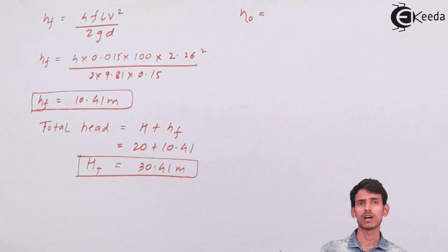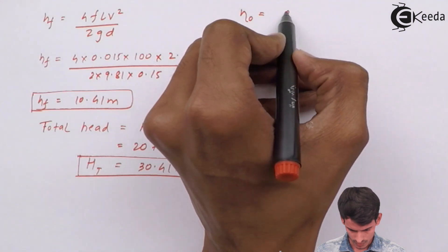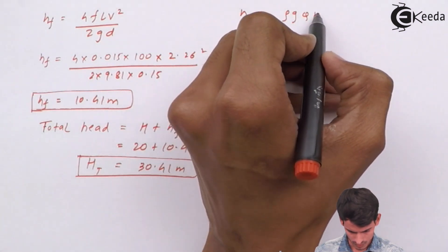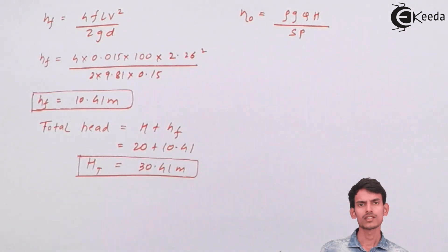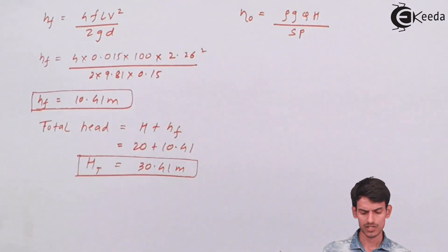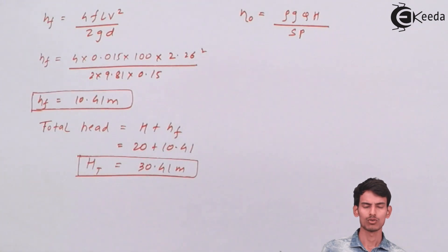Overall efficiency is nothing but the power developed by the impeller (or the pump) divided by the shaft power. Now we'll get the shaft power very easily because overall efficiency is given, the value of power developed (ρgQH) is known to you. Substitute everything in this equation and get the value of shaft power.